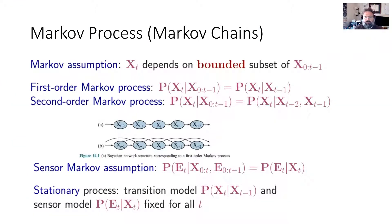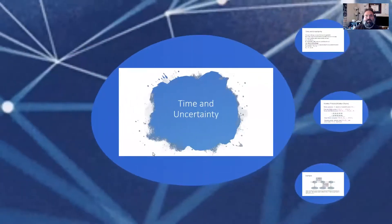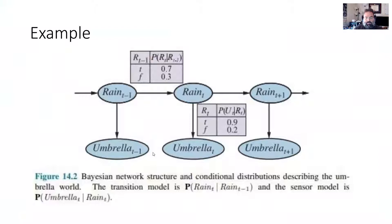This leads to the discussion of Markov processes and Markov chains. Not going to go into this in much detail — understand they are a thing, understand it's a way of dealing with things over time, and do spend some time reading about it if it's of interest. We're in a survey course here, not doing low-level mathematical proofs. This is basically going through a Bayesian network structure talking about conditional dependency distribution — for example, an umbrella world of whether it's raining and whether you should use an umbrella — showing T minus 1, T, and T plus 1.